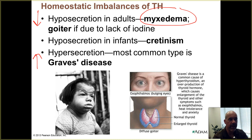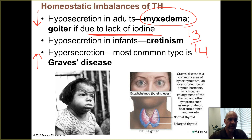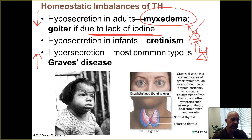If you don't have sufficient iodine in your diet, remember T3 is triiodothyronine and T4 is tetraiodothyronine — you need the iodine component. Without sufficient iodine, you won't manufacture T3 and T4. This raises the question: why would that lead to a goiter? A goiter is an enlarged thyroid gland.